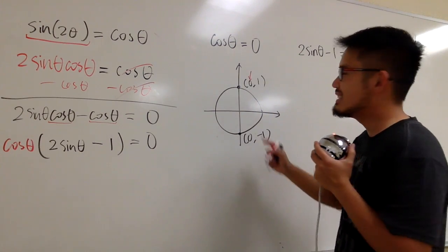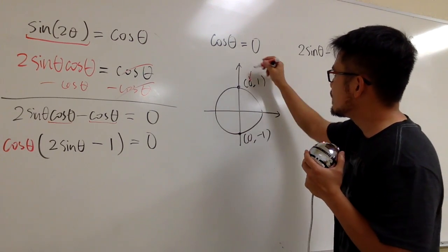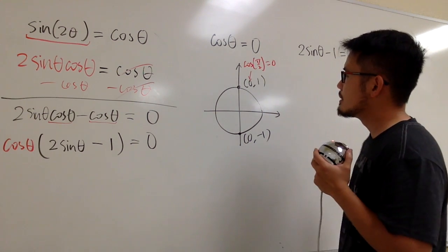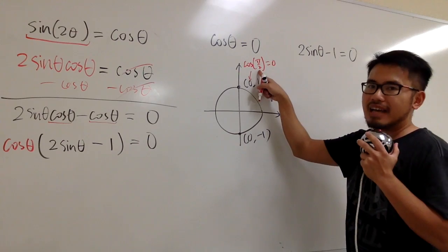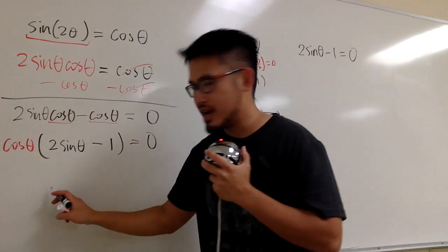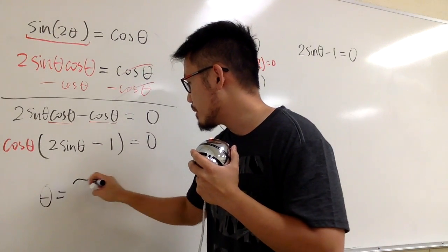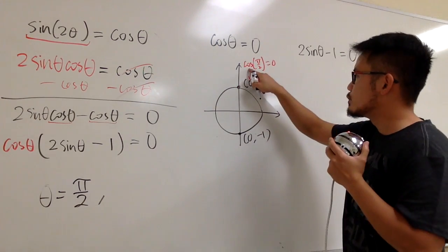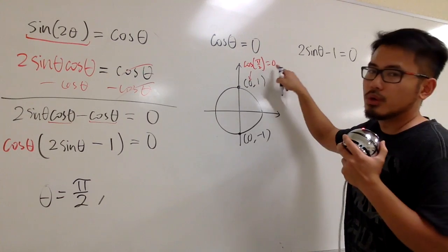Well, cosine is the x value. Cosine of 1 angle will end up to be 0. This right here is π over 2. That's the 90 degrees from here to here, 90 degrees. We know cosine of π over 2 is equal to 0. First answer: θ is equal to π over 2. I'm just putting down the angle, but I just want to show you cosine of π over 2 will end up to be 0.